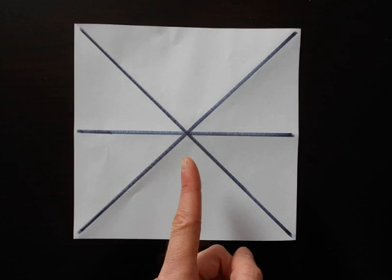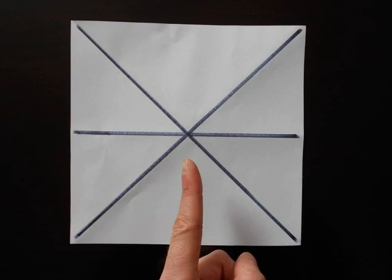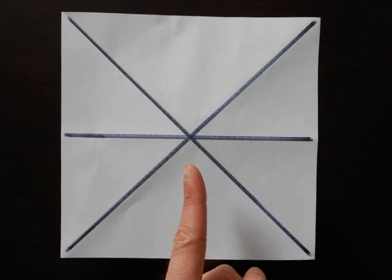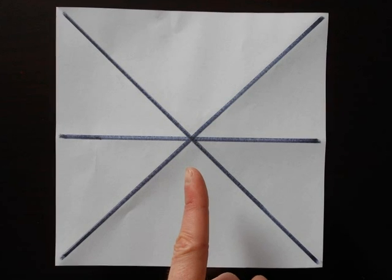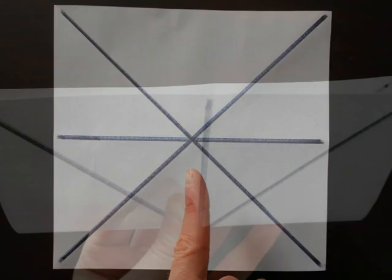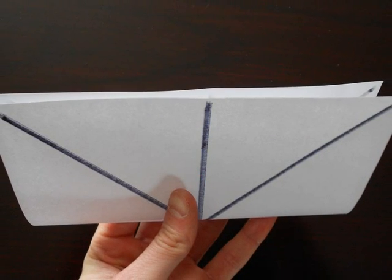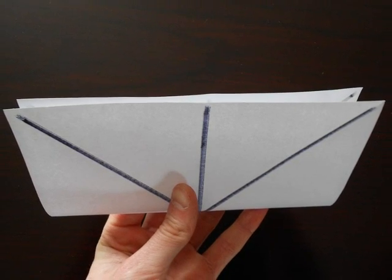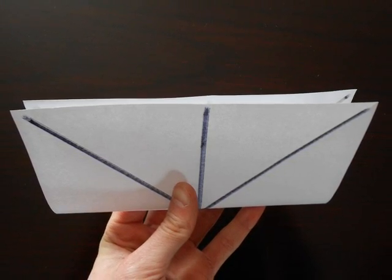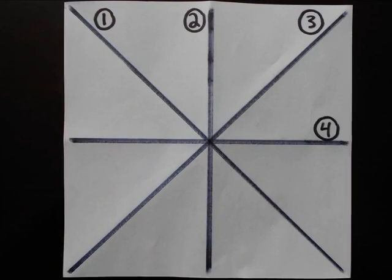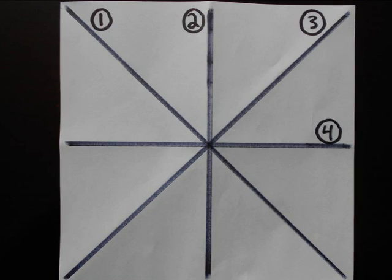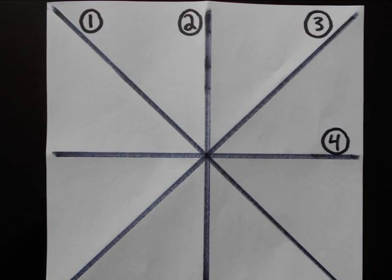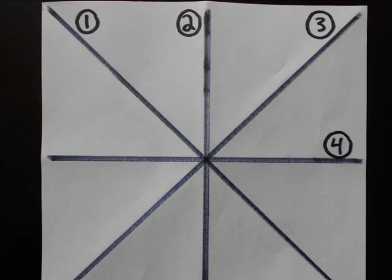Are there any more lines of symmetry? What if we folded the square along this line as shown here — would this be another line of symmetry? It sure would. As you can see, one side also lays flat on the other. We have now figured out that a square has one, two, three, four lines of symmetry.